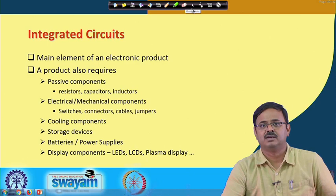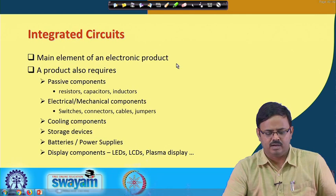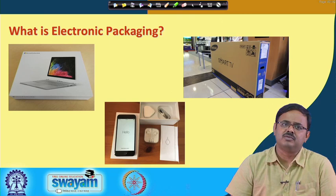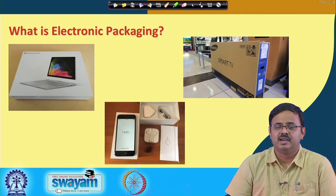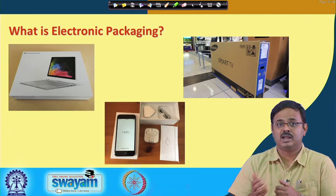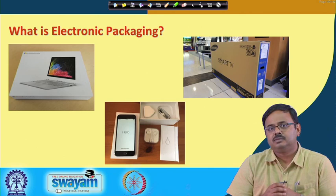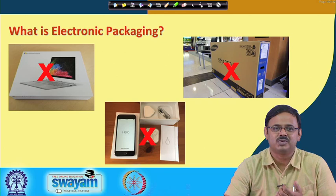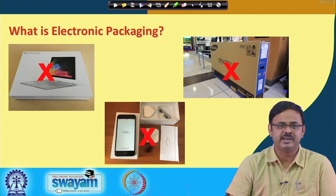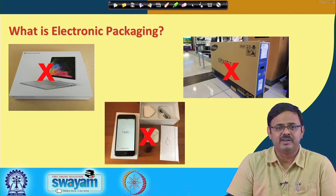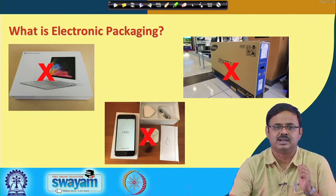One of the things people ask is: from the word 'packaging' that we know, is electronic packaging about cardboard boxes in which an electronic product goes so that it can be shipped safely from one place to another or stored safely? We are seeing all these images - is this what electronic packaging means? Because the word 'packaging' can be a little confusing. The answer is of course no. This is not electronic packaging; this may be electronic packing or packing materials. It is important, but when we talk about electronic packaging, this is not what we mean.